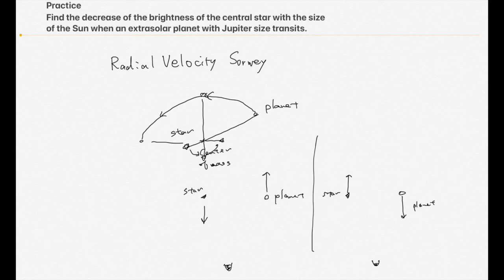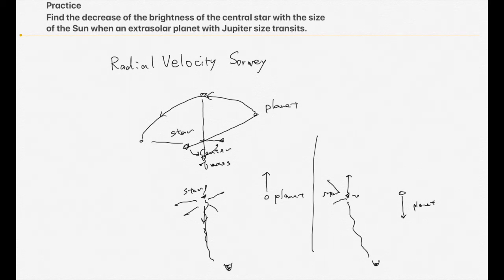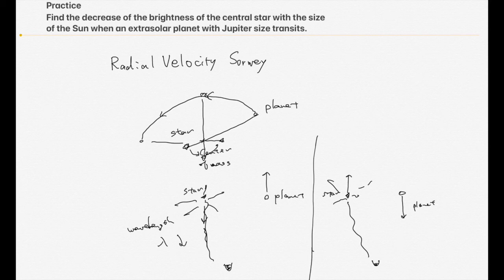Then we could detect light from the stars. Actually, stars emit light in all directions, but sometimes we could detect light from the stars. The wavelength of the star's light becomes shorter when the star is moving toward us — so lambda is wavelength — it becomes shorter, decreasing. In this case, if the star is moving away from us, the wavelength lambda becomes longer.